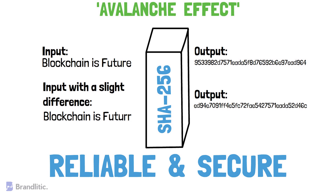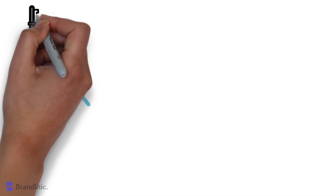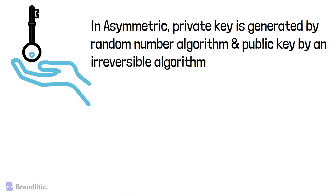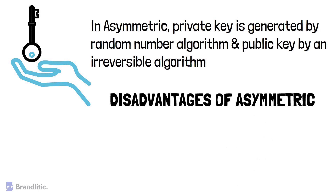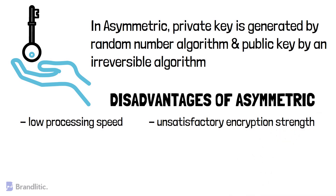Regarding asymmetric key cryptography, the private key generally needs to be produced by a random number algorithm, and the public key is calculated by executing an irreversible algorithm. Asymmetric encryption has the advantage of having separate public and private keys, which can be transferred over unsecured channels easily. However, it also has disadvantages, including low processing speed and unsatisfactory encryption strength. It is also necessary to ensure the security of the asymmetric encryption algorithm during data transmission on the blockchain.